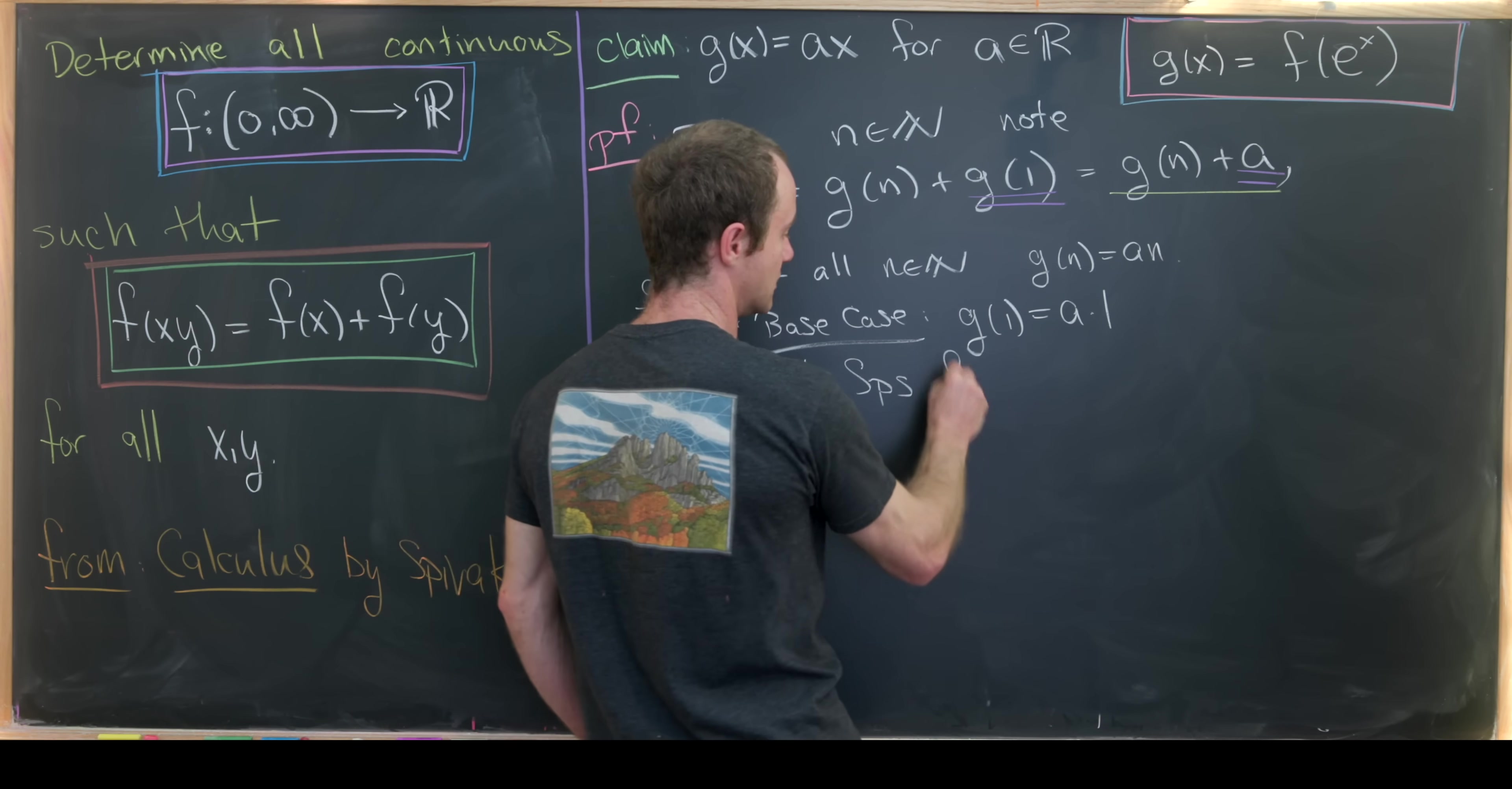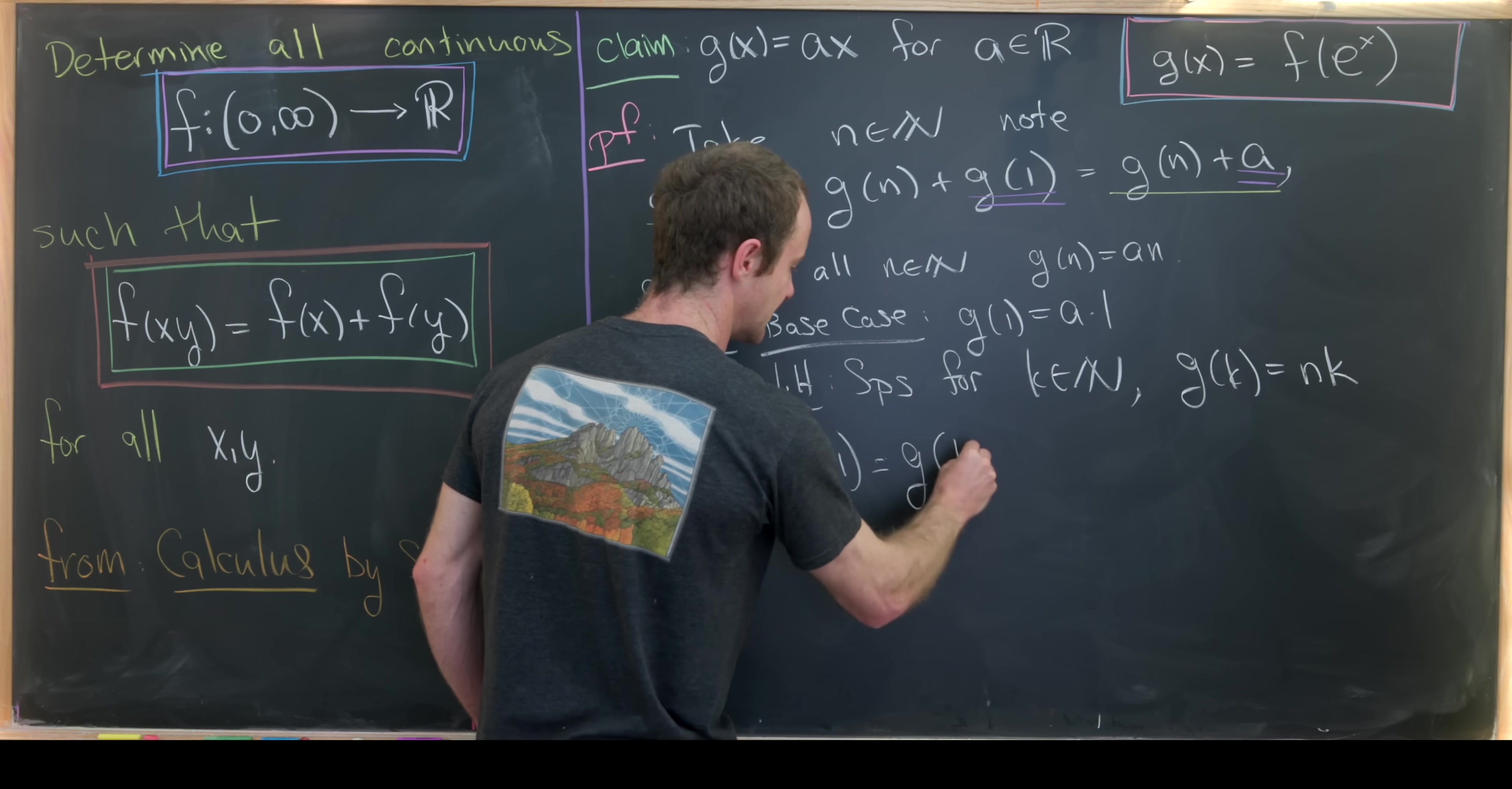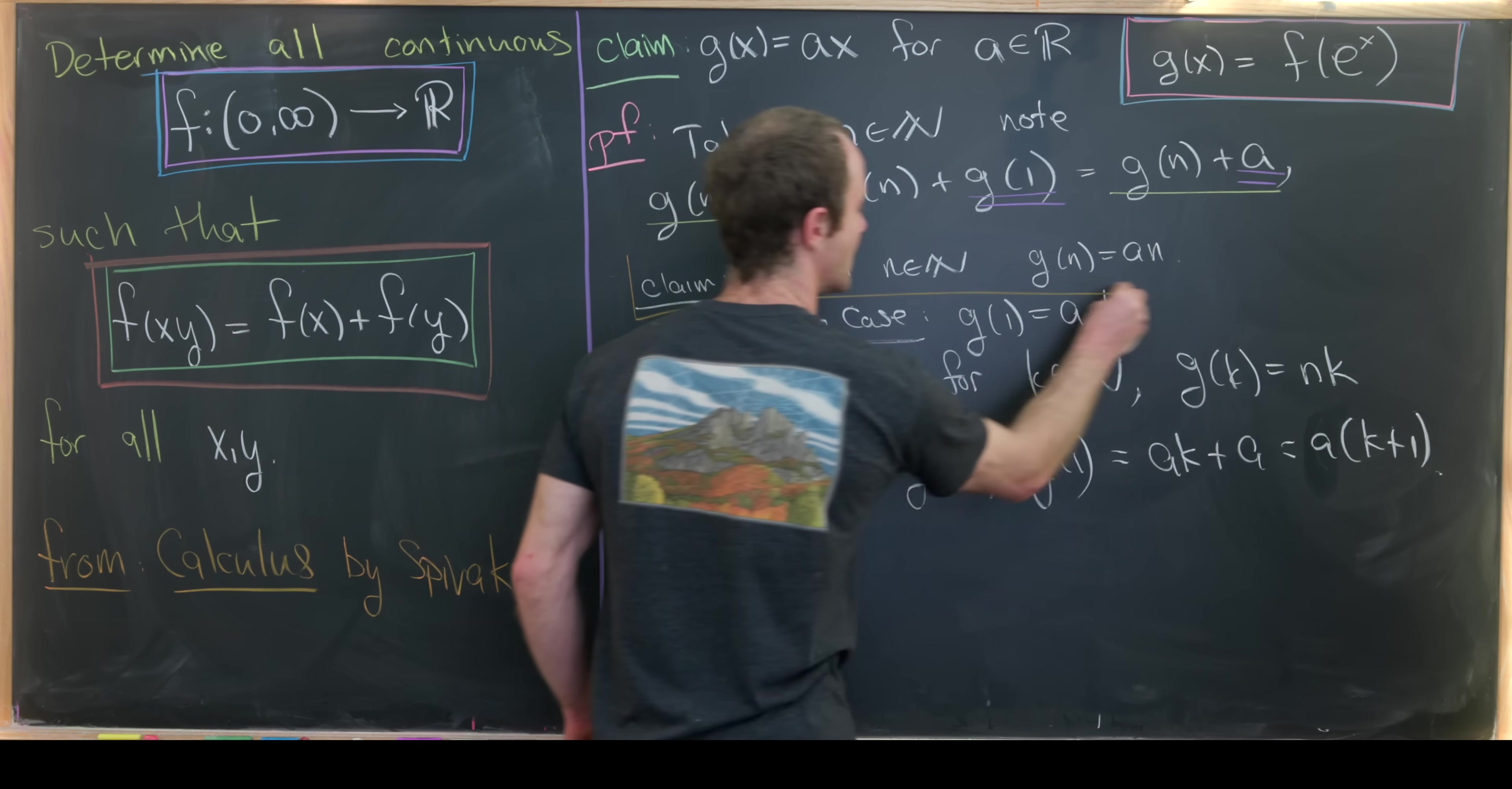Let's suppose for some k, which is a natural number, we have g(k) is equal to a times k. And now let's look at g(k+1). Well, using this additive rule, we see that that is g(k) plus g(1), which is equal to a times k plus a, which is equal to a times (k+1), which is exactly what we need. So putting this all together, we have our claim proved.